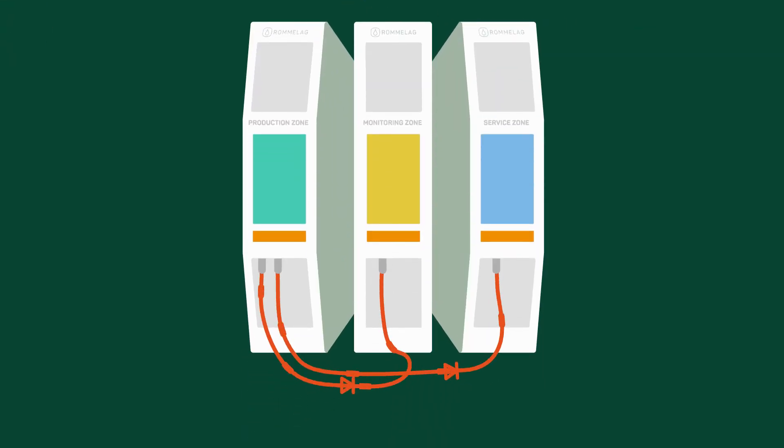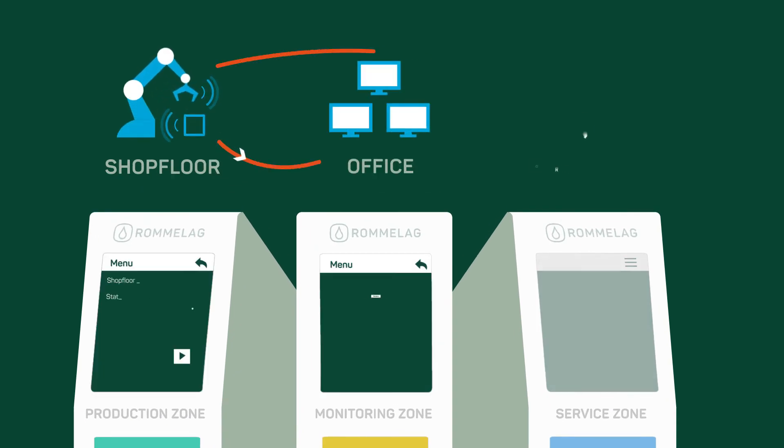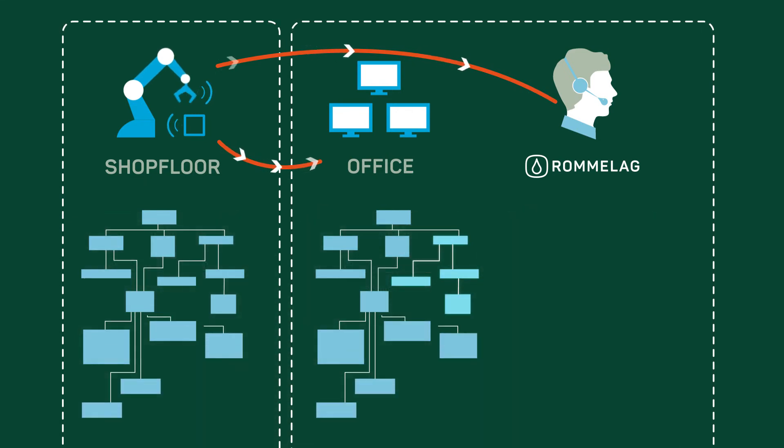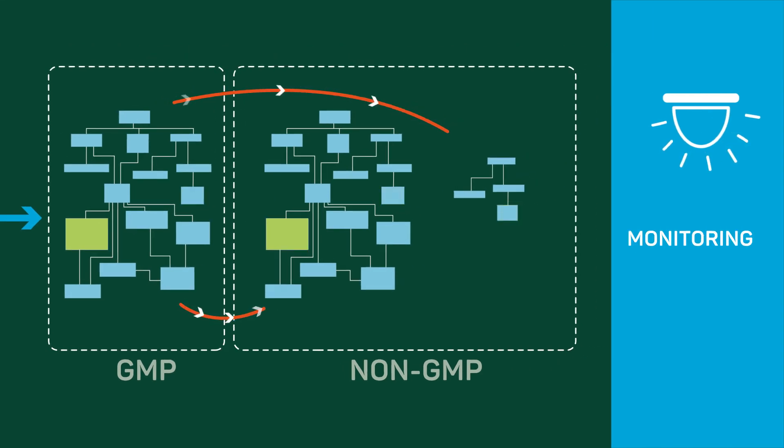RPP comes with built-in hardware data diodes. Thus, it can be connected to less secure networks with the highest level of safety for your production. This provides access to all data tags also outside the GMP environment for advanced monitoring and maintenance or increasing overall productivity.